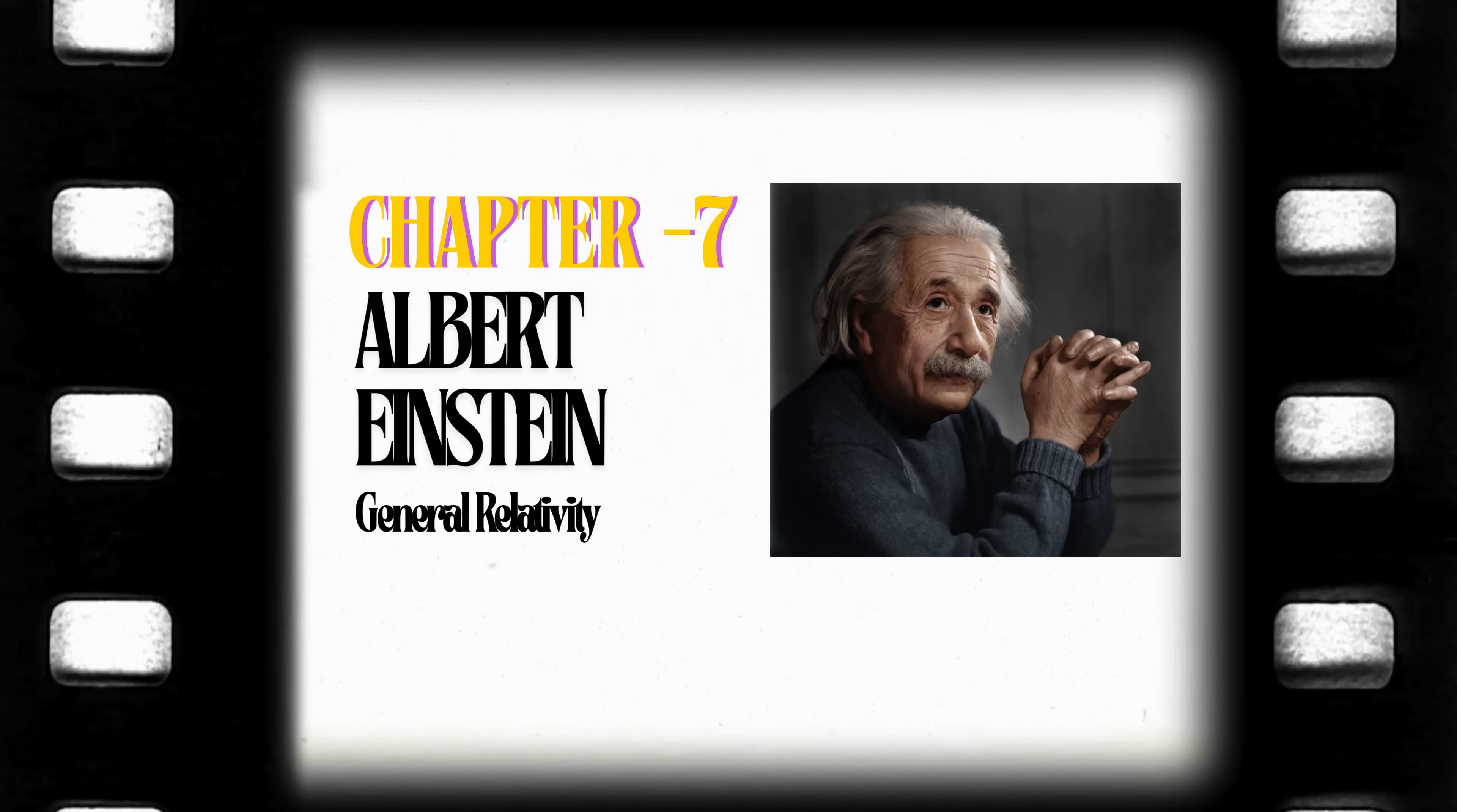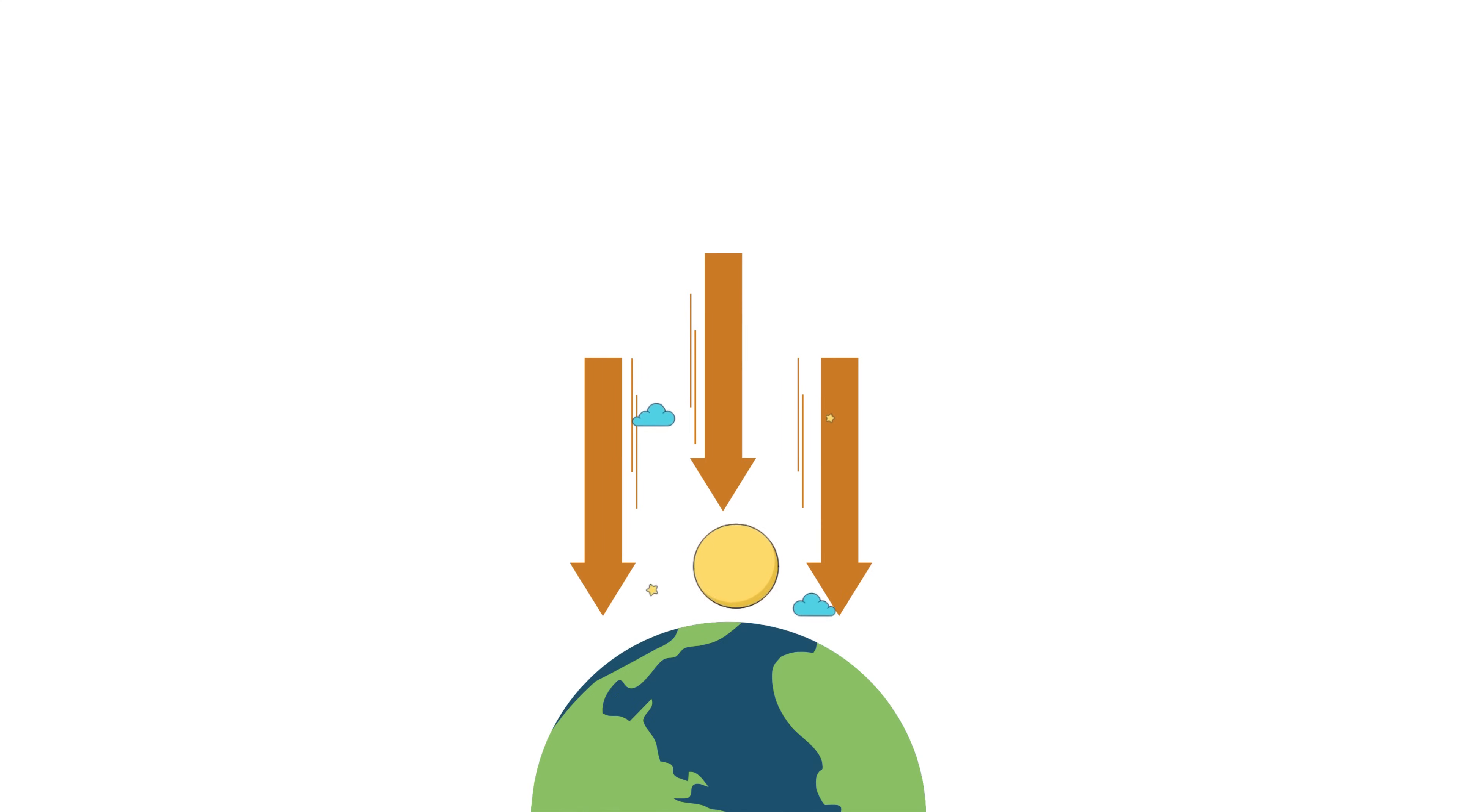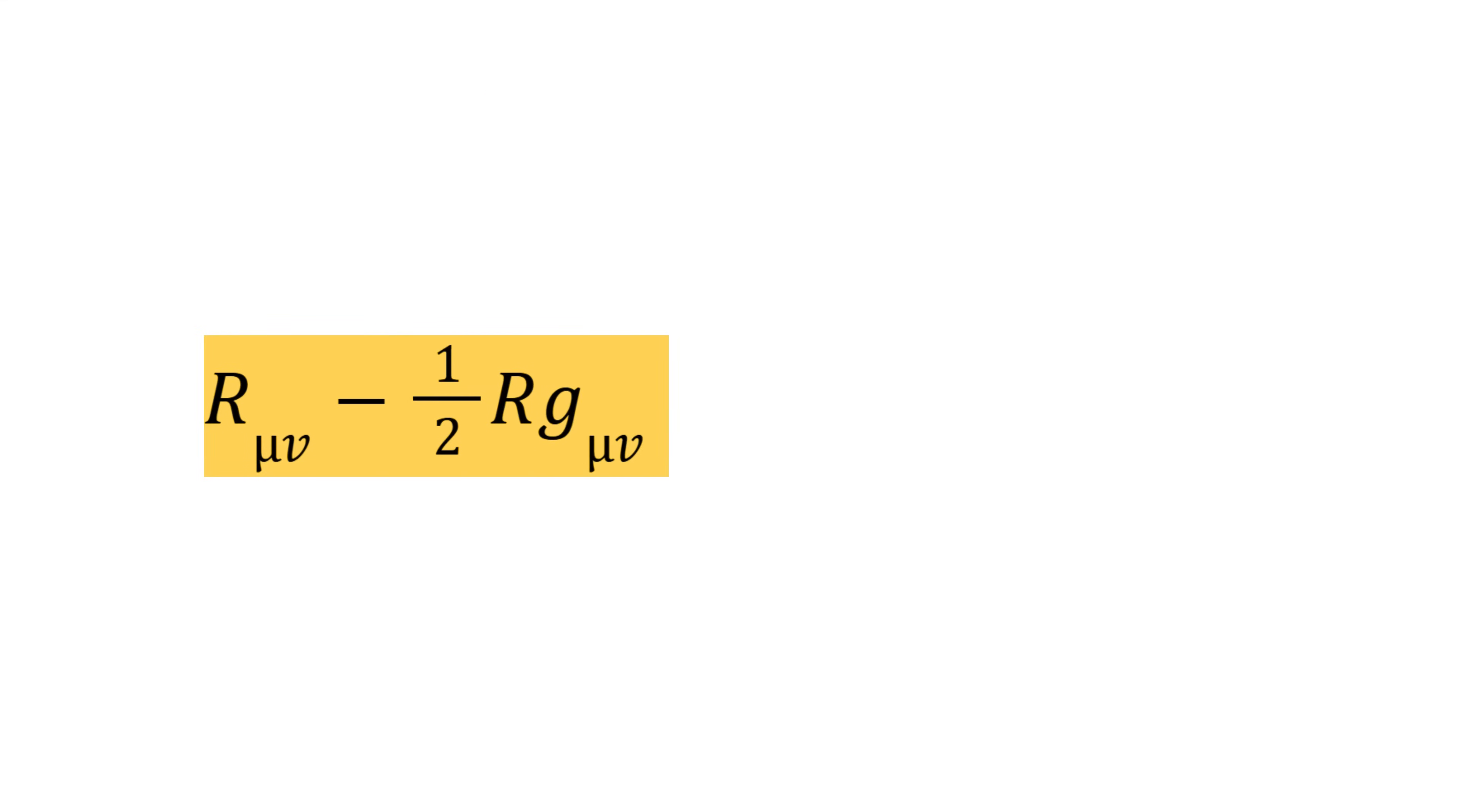Albert Einstein, General Relativity. In 1915, Albert Einstein presented the theory of general relativity, revolutionizing our understanding of space, time, and gravity. Instead of conceiving of gravity as a force, he proposed that massive objects curve spacetime, and this curvature guides the motion of other bodies.